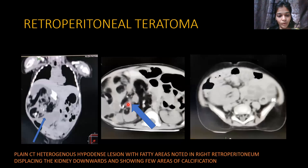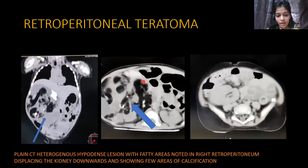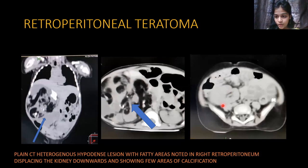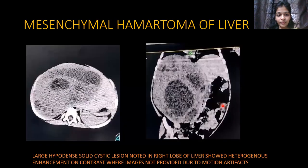Next is a retroperitoneal teratoma. A heterogeneously hyperdense lesion is seen in the retroperitoneum with fatty areas and calcifications. The lesion has displaced the kidney downwards, consistent with a retroperitoneal teratoma.